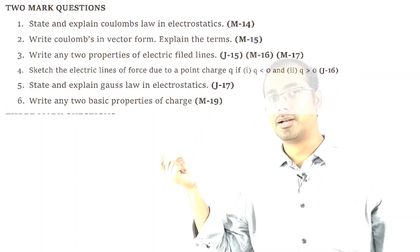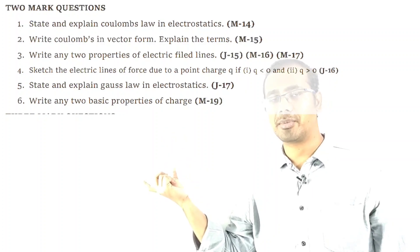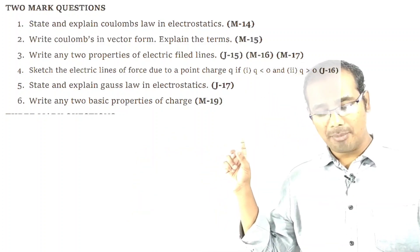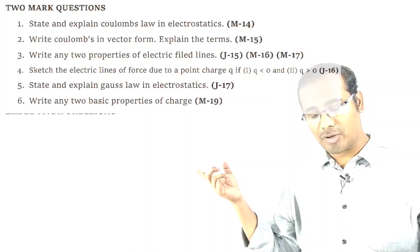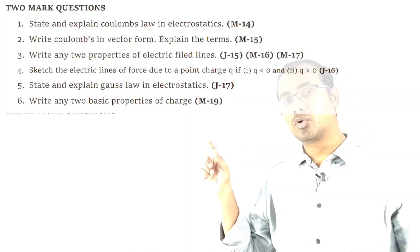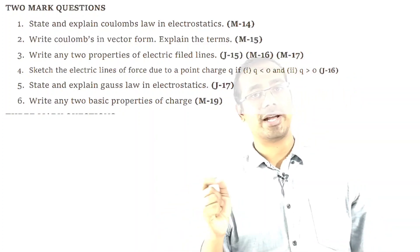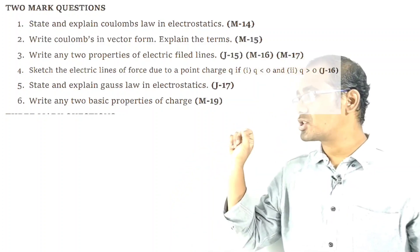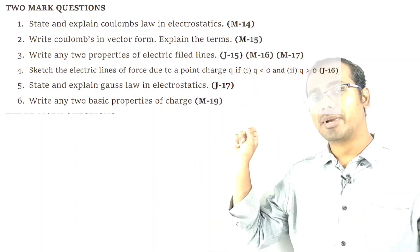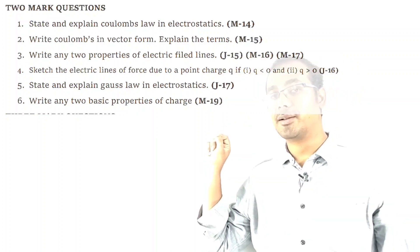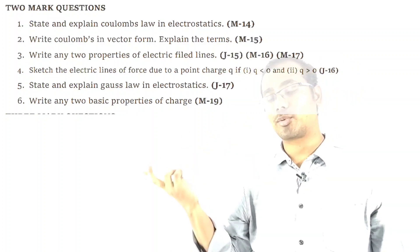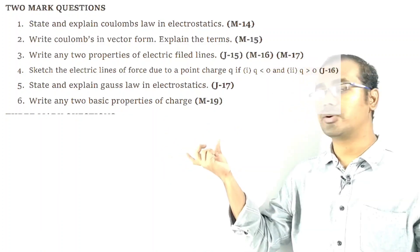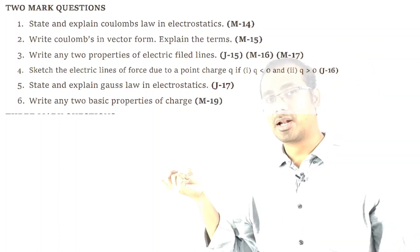Formula is very important, define each term. Third important question: write any two properties of electric field lines. Fourth important question: state and explain Gauss law in electrostatics — 2 marks, state and explain the formula. Last important question: write the two basic properties of electric charge.